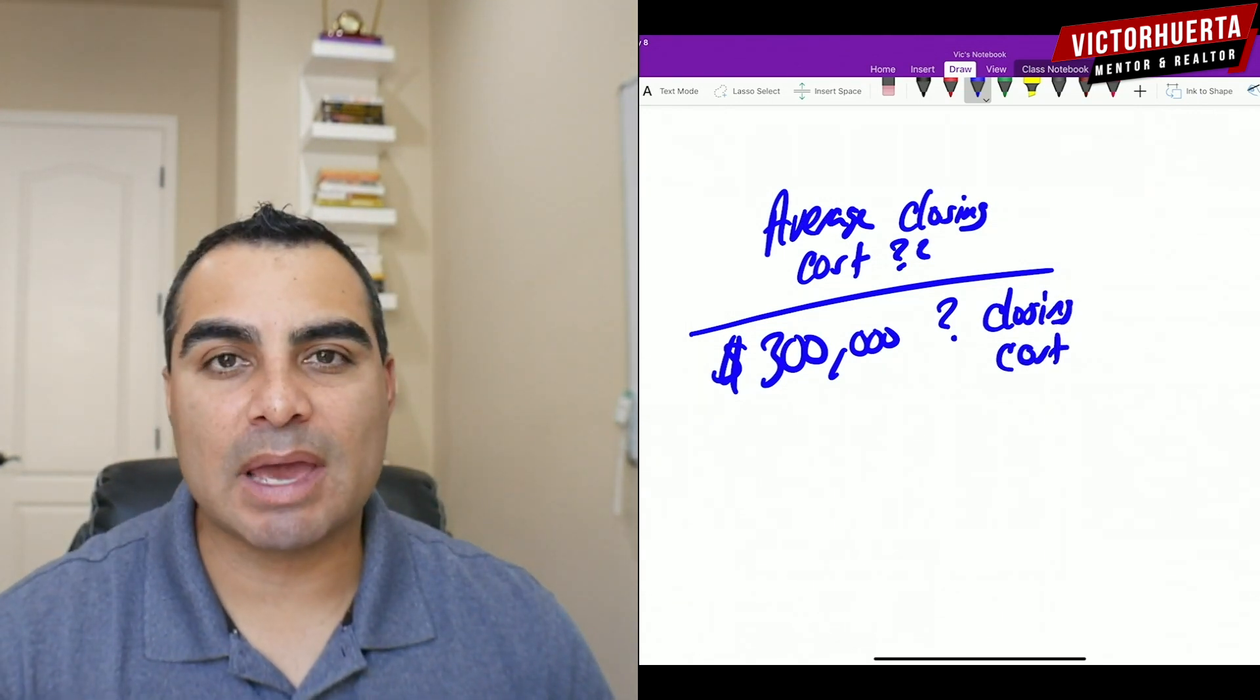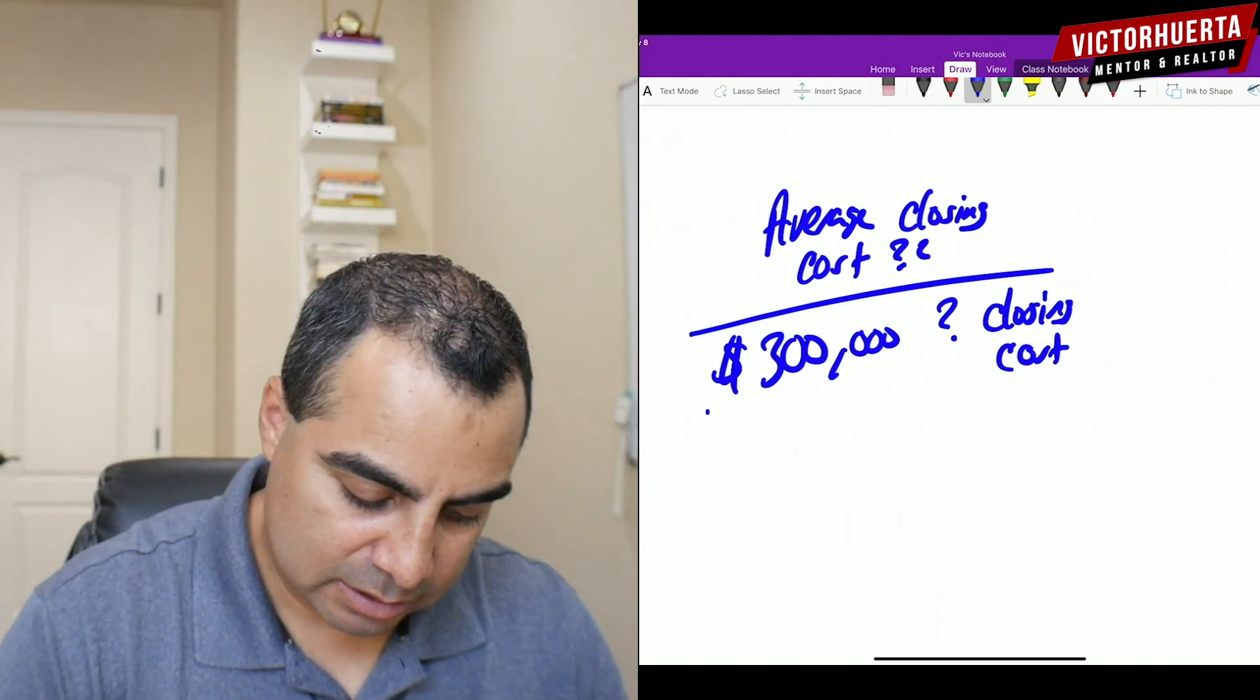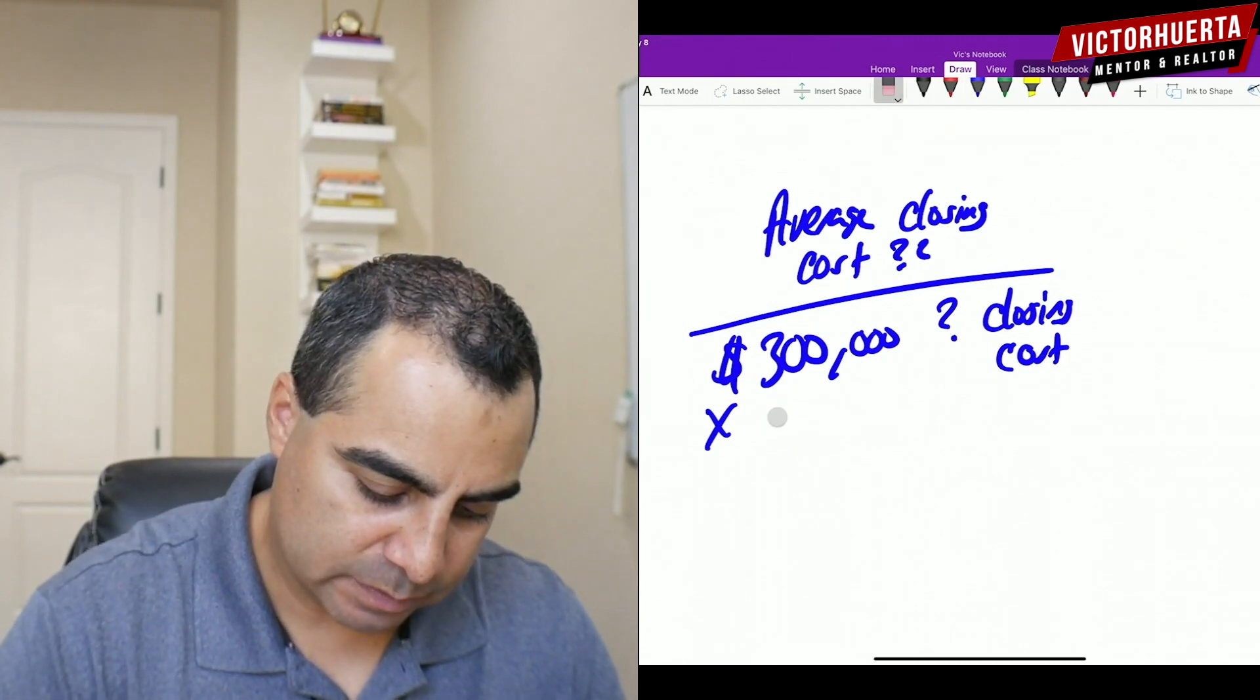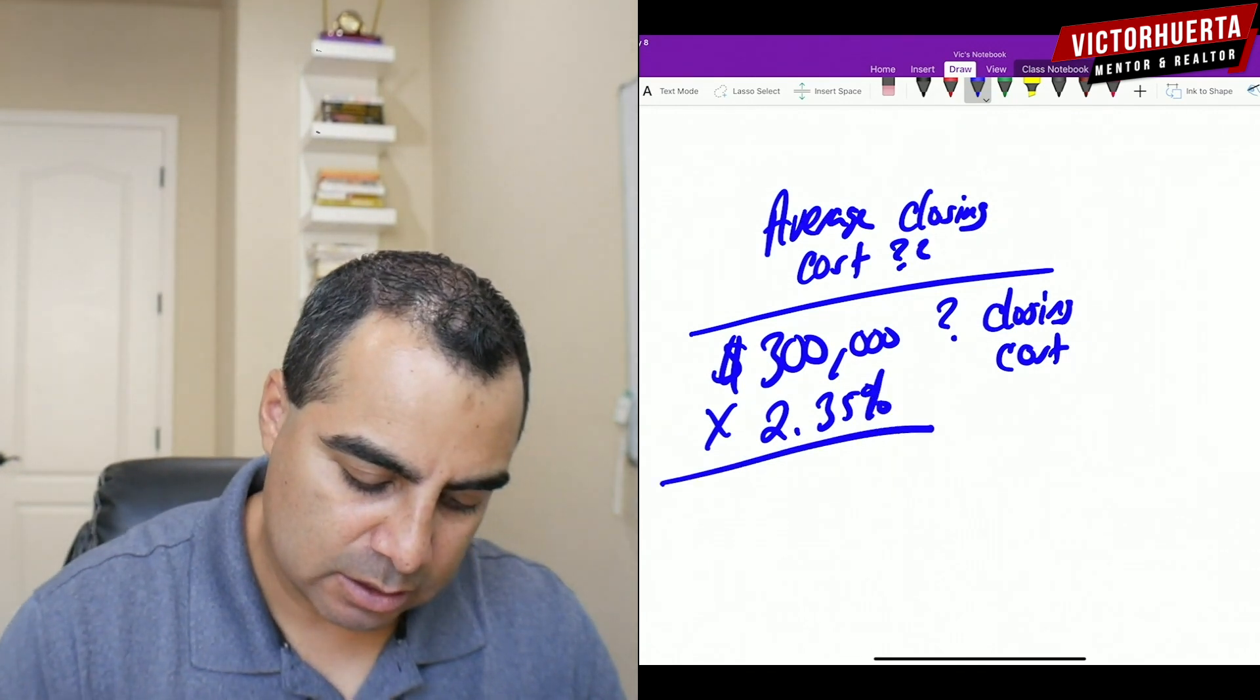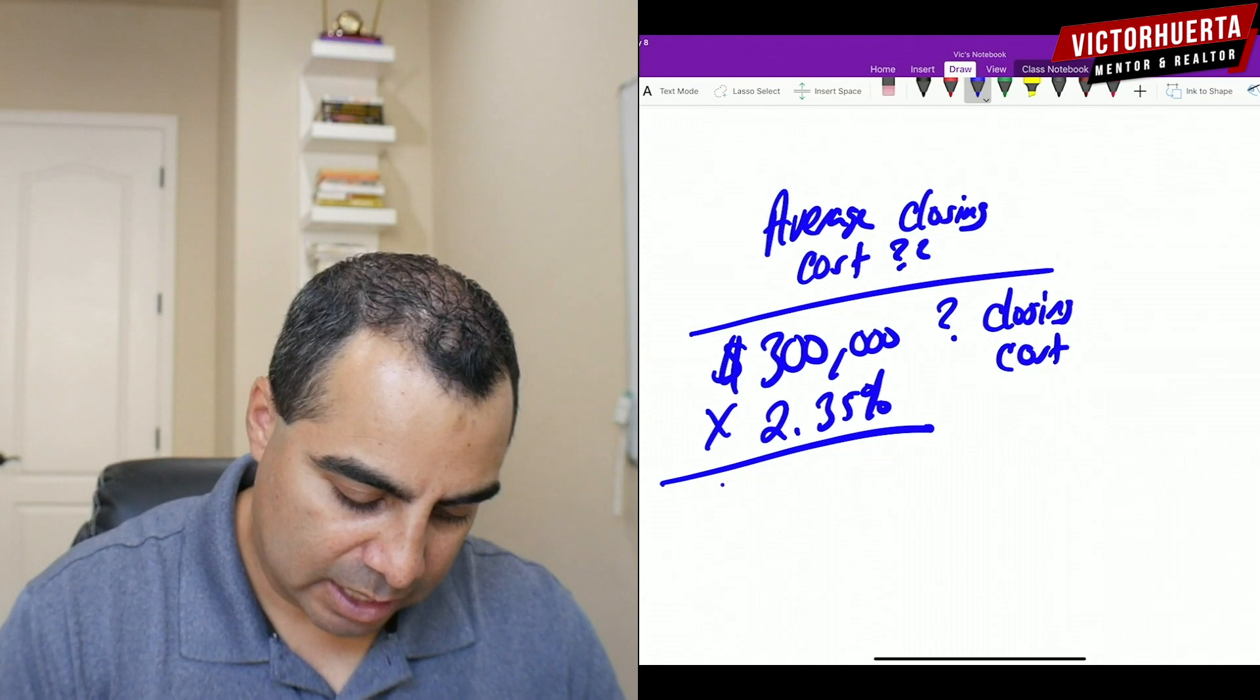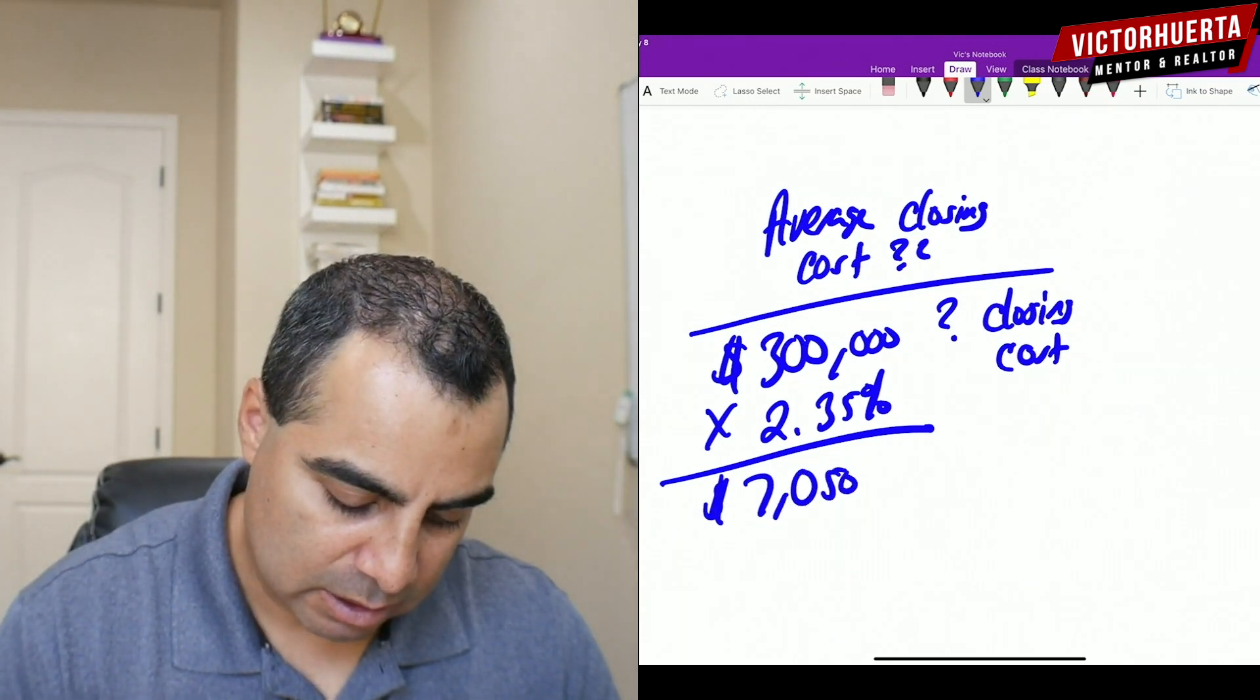The very simple math I could do is I could just tell you if you take this and you multiply this times, oh bam, I already messed up. Let's do this again. Times 2.35%. This is kind of a simple math. You will get, I wrote it down here, $7,050.